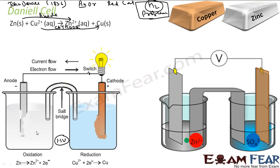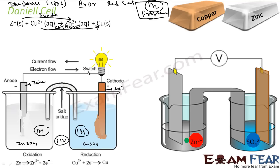The potential of the Daniel cell is 1.1 volts. Note that all concentrations are one molar: one mole of zinc sulfate and one mole of copper sulfate. A copper rod is dipped in copper sulfate solution, and a zinc rod is dipped in one mole of zinc sulfate solution. Zinc gets oxidized so it is the anode, and copper sulfate is reduced to copper so it is the cathode.